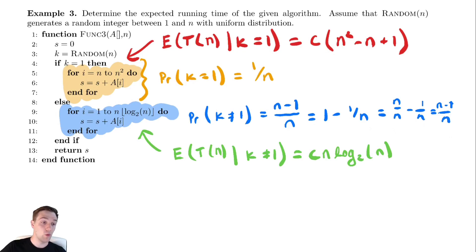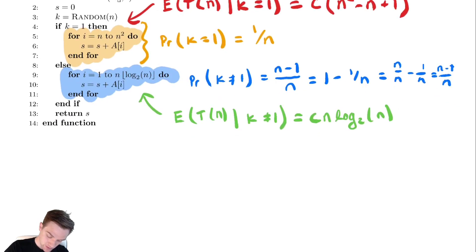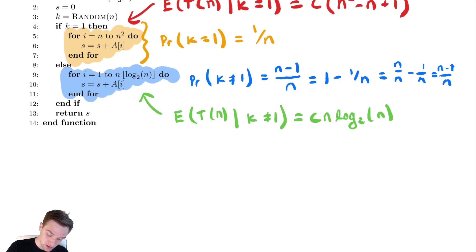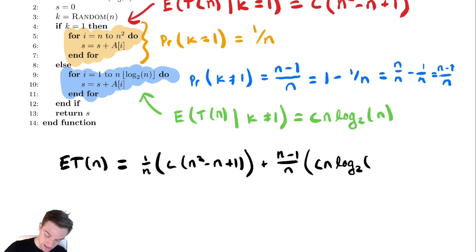I know one nth of the time I execute the orange block of code. So that means that if I wanted to compute the expected runtime, e t of n, without any sort of conditions on that, well, one nth of the time, I know it takes c times n squared minus n plus one, and the remaining n minus one over n time, it takes c n log base two of n.